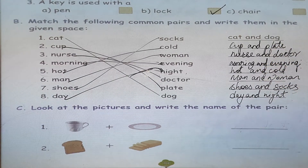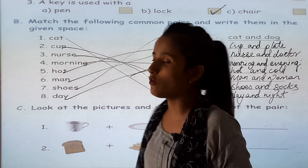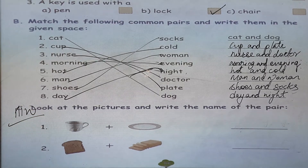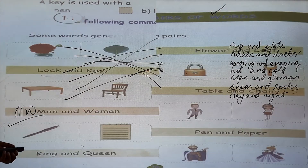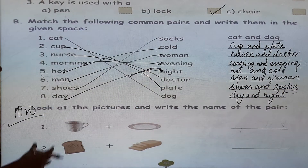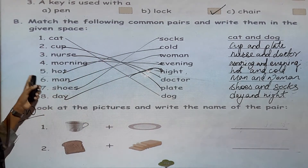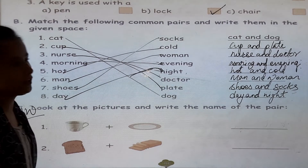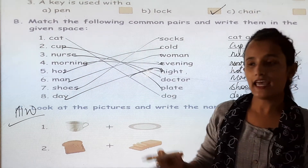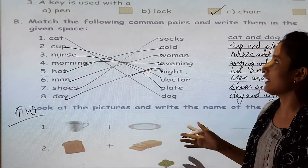Look at the pictures and write the names of the pairs. This is your homework — you can see the pictures and write the names. Now you can read this sentence and write in your copy. There are so many words, not only these — you can make many words with letters.